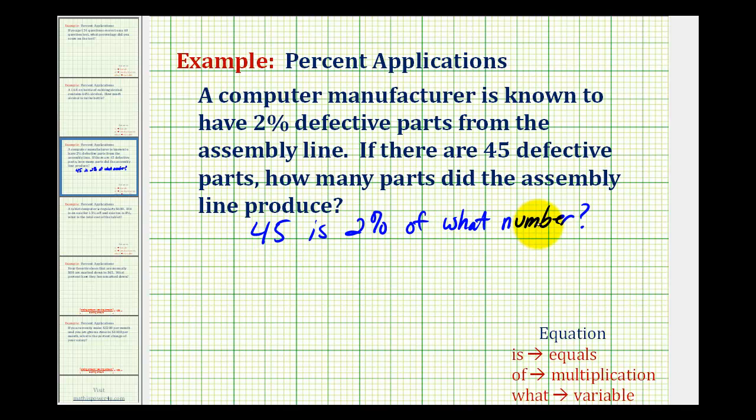Now we'll take this basic percent question and write the percent equation. So here we'll have 45 is, means, equals. We'll write 2% as a decimal which will be 0.02. Of means multiplication. And what, or what number, would be the unknown which we'll represent by x.